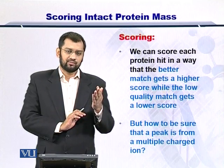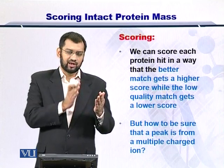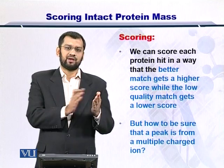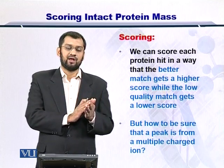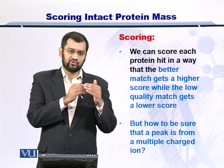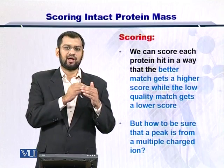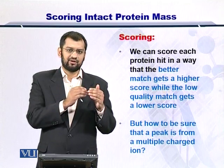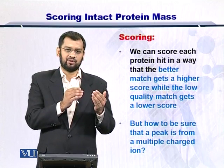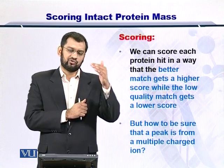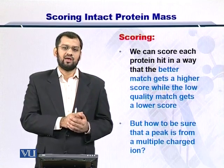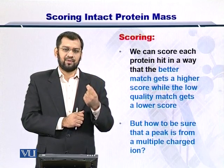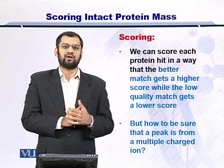Once you have this molecular weight from the MS1 and all the molecular weights from the database, you can compare each one of them together. The two molecular weights that are closest are ranked number one. If the match is a little lesser, then you rank them number two, and so on. You will end up with a list of ranked proteins, with the top-ranking protein being the closest in mass to the mass reported from the mass spectrometer.